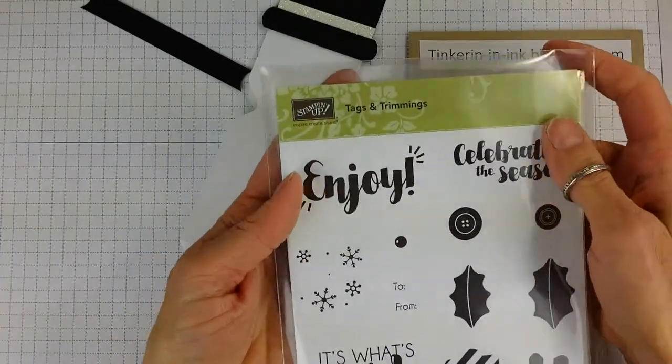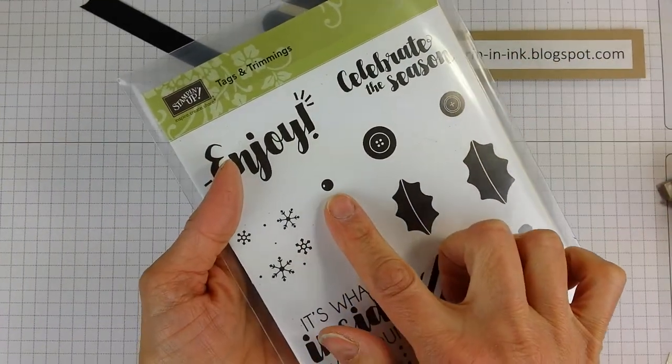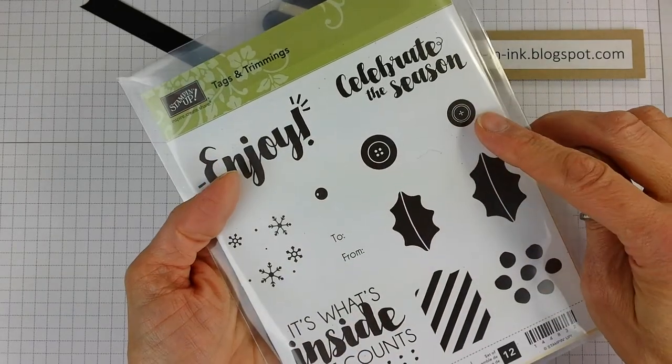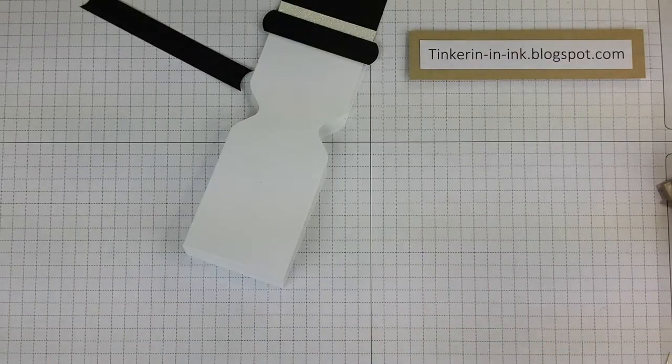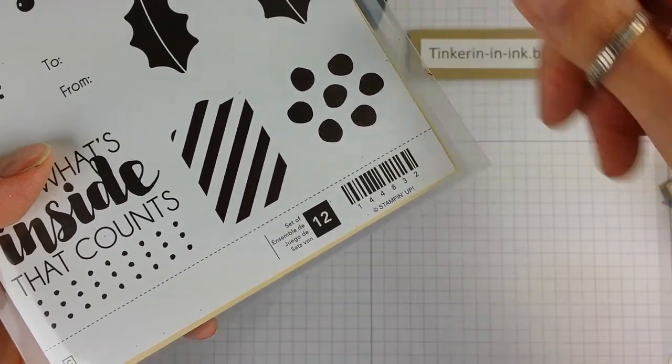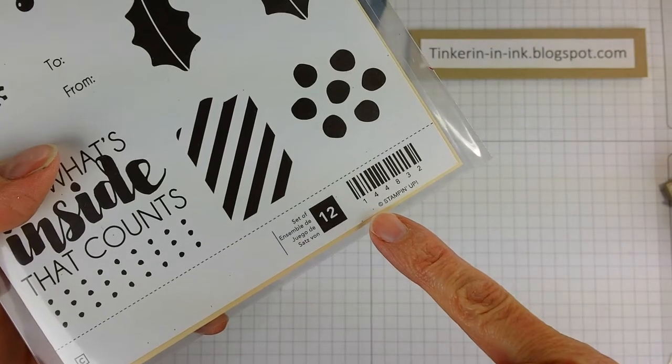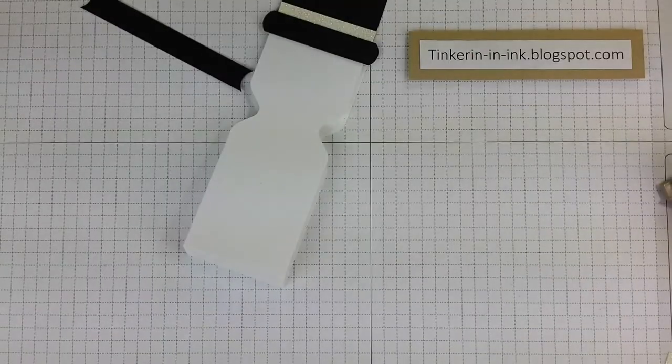Then we're going to talk about the stamp set that I found that works perfectly for this. It is the Tags and Trimmings stamp set. We're going to use this little holly berry and this button to do our stamping on this fella. And that is in the 2017 holiday mini. This is the clear mount and it's 144832 for the item number if you're wanting to pick that up.